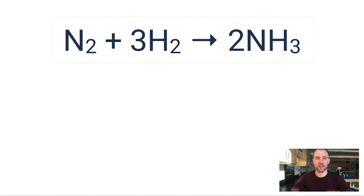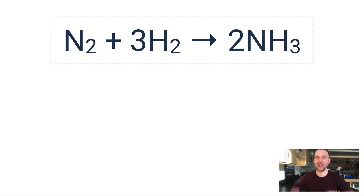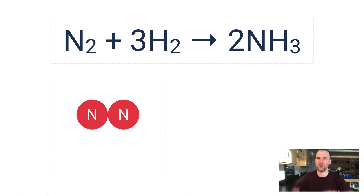Let me give you a chemistry example of what stoichiometry looks like. If I had this equation — N₂ (nitrogen gas) plus three moles of H₂ (hydrogen gas) making two moles of NH₃ (ammonia) — you can look at this balanced equation as a recipe. You can predict how much of a substance you might make, knowing how much reactant you're putting in. Let me show you this visually.